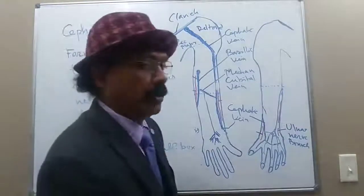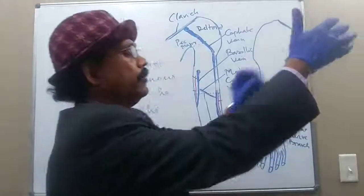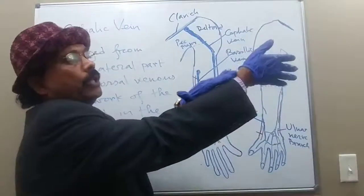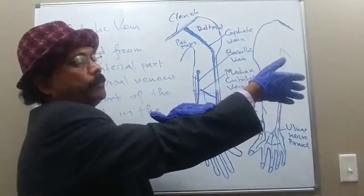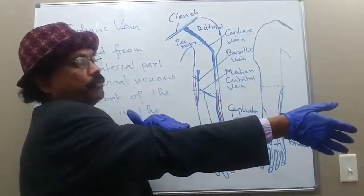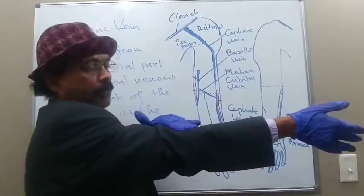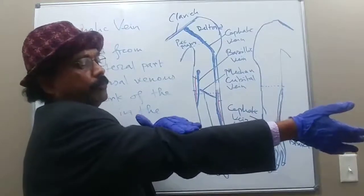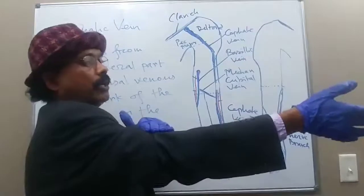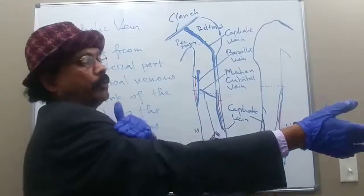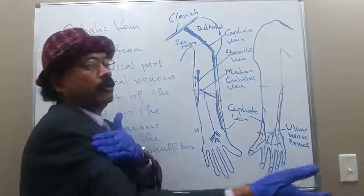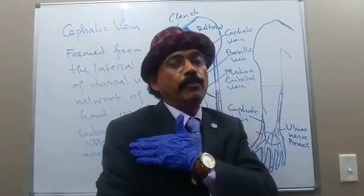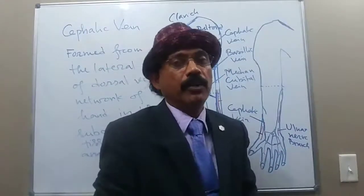The cephalic vein is a pre-axial vein. It passes along the lateral border of the forearm, then passes in front of the elbow joint along the lateral side, and continues along the lateral border of the biceps brachii muscle.